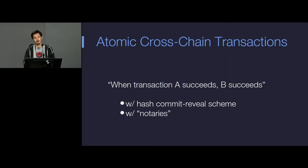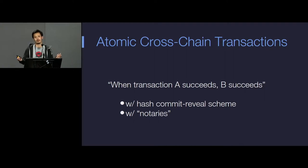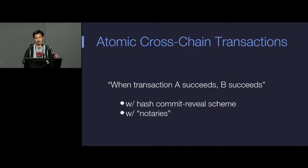Or you can use notaries — multiple signers. The way that would work is you set up two transactions to complete only if the notaries press a button and say these transactions are going to go. So there are roughly two ways to make atomic cross-chain transactions work.